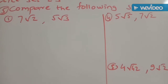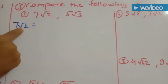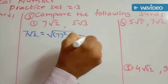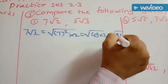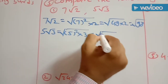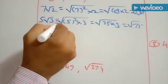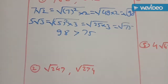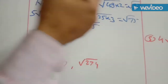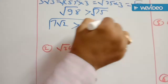Next example: compare the following SIRDs. First pair: 7 root of 2 and 5 root of 3. The order is 2. For 7 root of 2, write as square root of 7 squared into 2 — that is root of 49 into 2, which is root of 98. For 5 root of 3, write as square root of 5 squared into 3 — that is root of 25 into 3, which is root of 75. Now comparing: 98 is greater than 75, so root of 98 is greater than root of 75, meaning 7 root of 2 is greater than 5 root of 3.